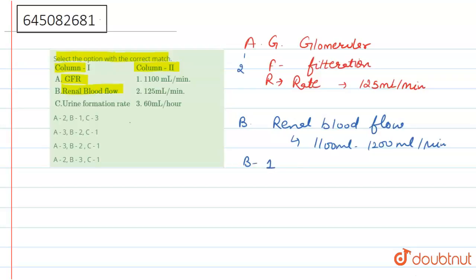Now move to C. Here C is urine formation rate. What is urine formation rate? We can see urine formation rate is 60 ml per hour. Because of this, we can say that it represents C third.